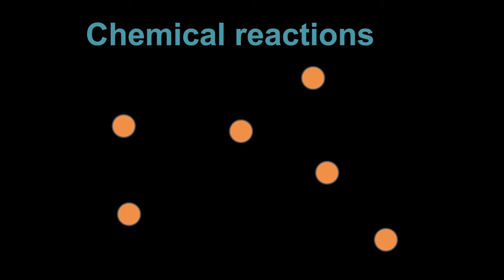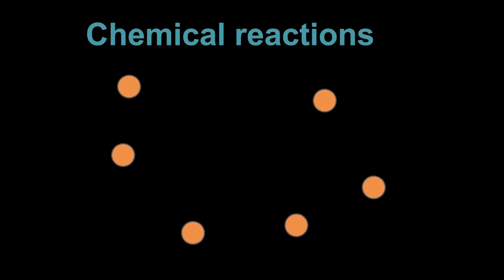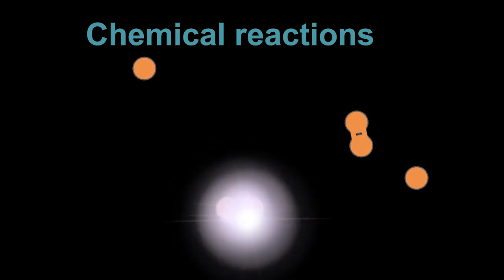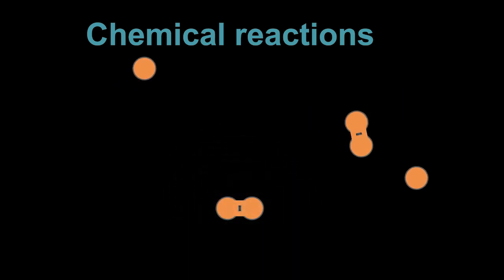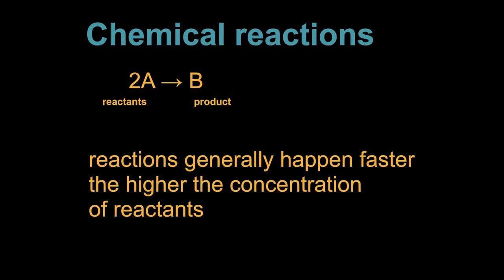The place to start is by thinking about chemical reactions. Imagine we have a chemical species A in solution. These molecules are all moving around at random and occasionally they collide. When they do collide, occasionally they react to form another species B. This happens repeatedly, and so if we watch this system over time, we would see that the concentration of A decreases while the concentration of B increases. This reaction would be written as 2A goes to B, where A is called the reactants and B is the product.